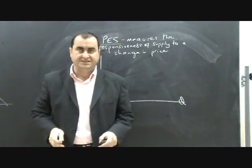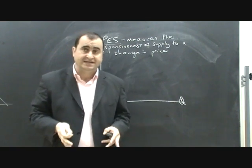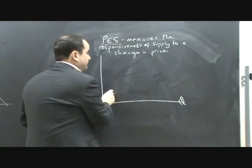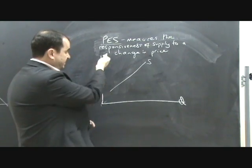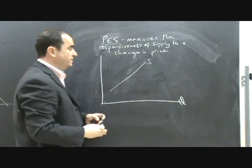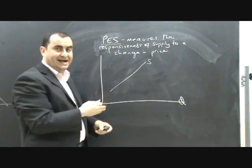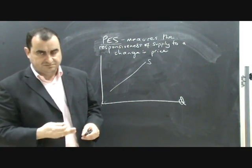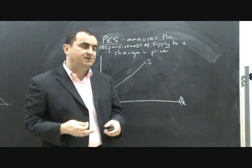So when a good changes in price, how much can the suppliers react? We know that supply curves slope upwards, which indicates that at higher prices suppliers want to supply more. But when price rises, how much more will they supply? How much can they react?